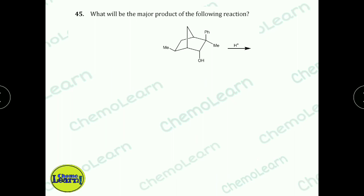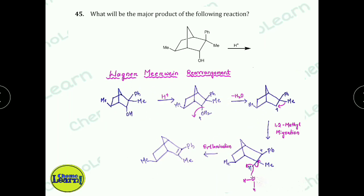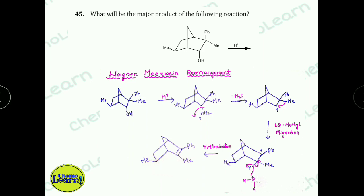Next question: What will be the major product in the following reaction? This is a Wagner-Meerwein rearrangement. In the mechanism: first, acidification occurs; then water is removed to form a carbocation; then a 1,2-methyl migration takes place; followed by removal of a proton (H⁺) to give a double bond. This gives the final product via the Wagner-Meerwein rearrangement.